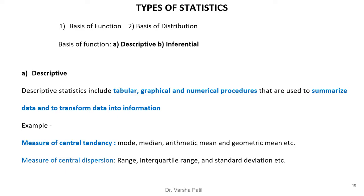Descriptive statistics includes tabular, graphical, and numerical procedures used to summarize data and transform data into information. Measures of central tendency and measures of dispersion are the popular methods. Under central tendency, the functions include mode, median, arithmetic mean, and geometric mean. Under central dispersion, methods include range, interquartile range, and standard deviation.